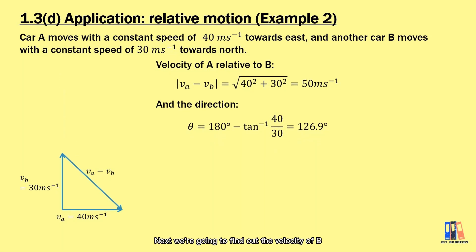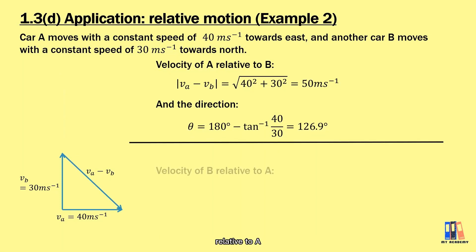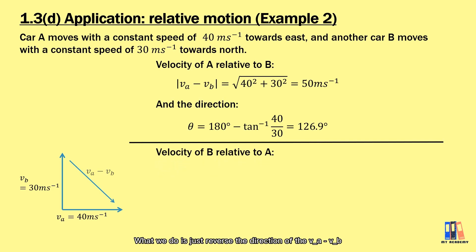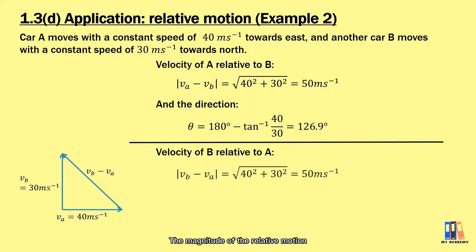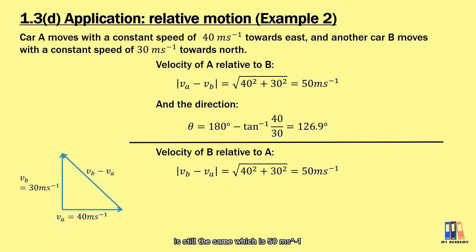Next, we find the velocity of B relative to A. What we do is reverse the direction of V_A minus V_B, which is equal to V_B minus V_A. The magnitude of the relative motion is still the same.